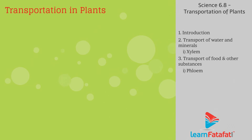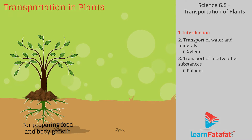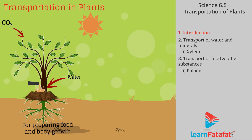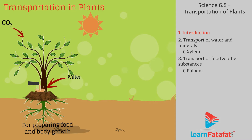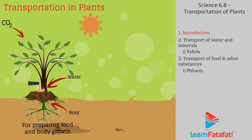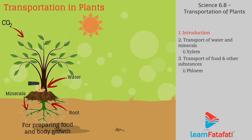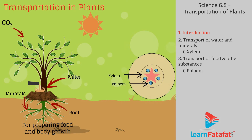Transportation in plants: plants need carbon dioxide, water, and other raw materials to prepare their food and for body growth. Plants obtain these raw materials at specific parts — for example, leaves take carbon dioxide from atmospheric air, roots take minerals from soil. These raw materials need to be transferred from one part to another.